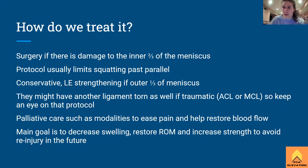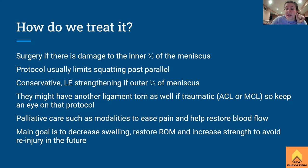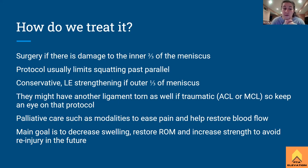For conservative management, palliative care using modalities is common. The boards often ask about ultrasound with the meniscus, and you can use ice or heat to help with pain. If there's a question about modalities for a meniscal tear, it's going to be ESTIM or ultrasound — the boards love ultrasound, so make sure you know all the parameters. Main goals for meniscal tears: decrease swelling, restore range of motion, increase strength, and patient education on avoiding future injury. For older adults with degenerative changes, encourage continued strengthening to prevent further tearing.